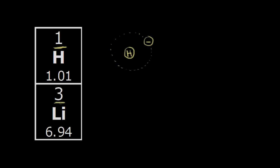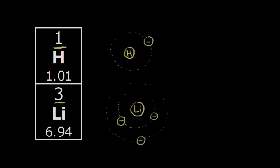For lithium with atomic number of three, that means three protons in the nucleus with three electrons. Two of those electrons are in the inner shell — the first energy level — and lithium's third electron is in the second energy level, or the outer shell. With these two atoms drawn, you can see that as you go down a group, you get an increase in the atomic radius, because you're adding electrons in higher energy levels that are farther away from the nucleus, making the atoms larger.